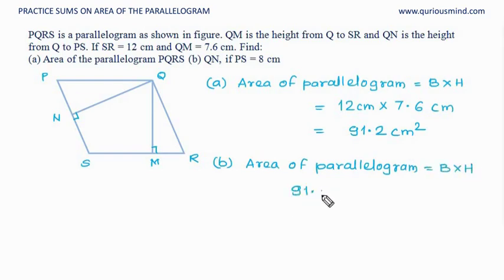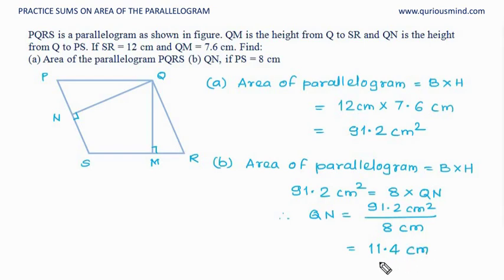And therefore area can also be written as—area we know now is 91.2. PS is 8, base is 8 into QN. And therefore QN is equal to 91.2 cm square divided by 8 cm. 8 ones are 8, 1 remaining, 1 and 1 is 11. 8 ones are 8, 3 remaining, 3 and 2 is 32. 8 fours are 32. So that would be 11.4 cm.